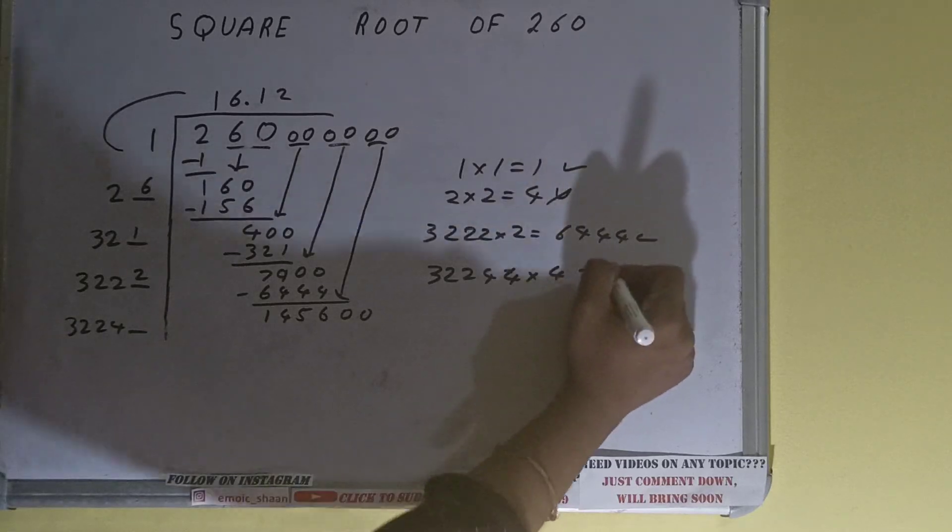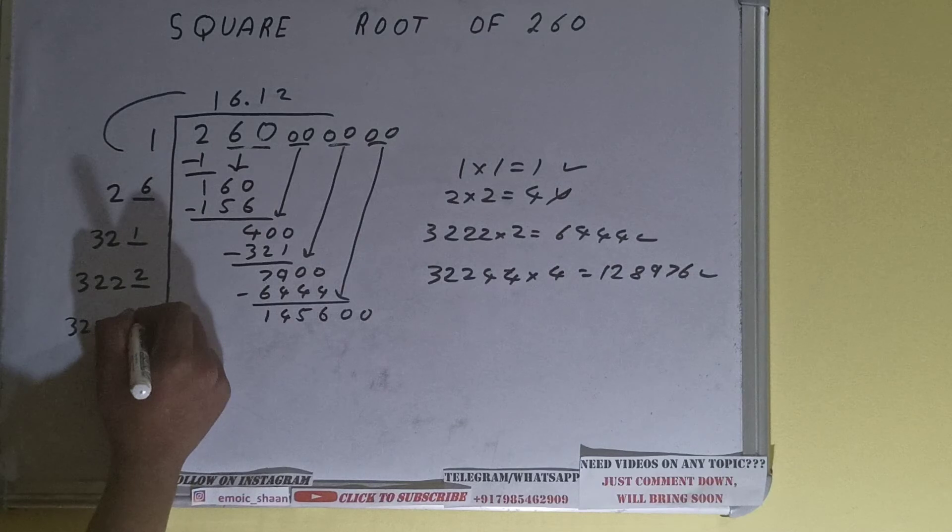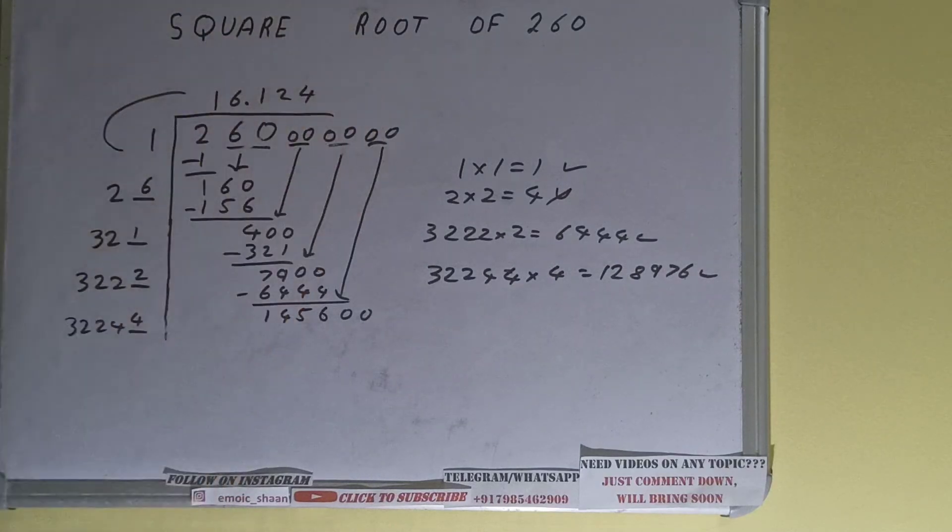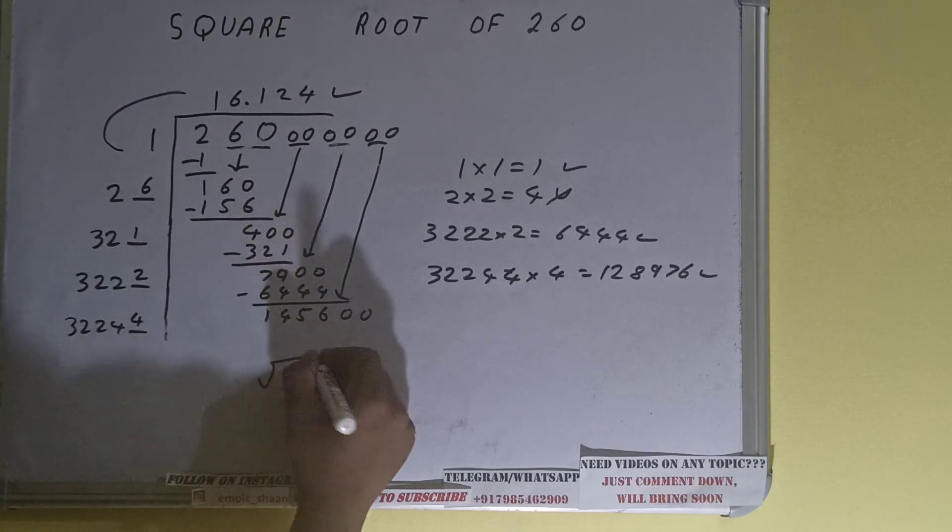It will be 128976 which is good to take. So four here and four here, but we don't need to calculate because we already got our answer correct up to three decimal places. So square root of 260 will be 16.124 and that will be the answer.